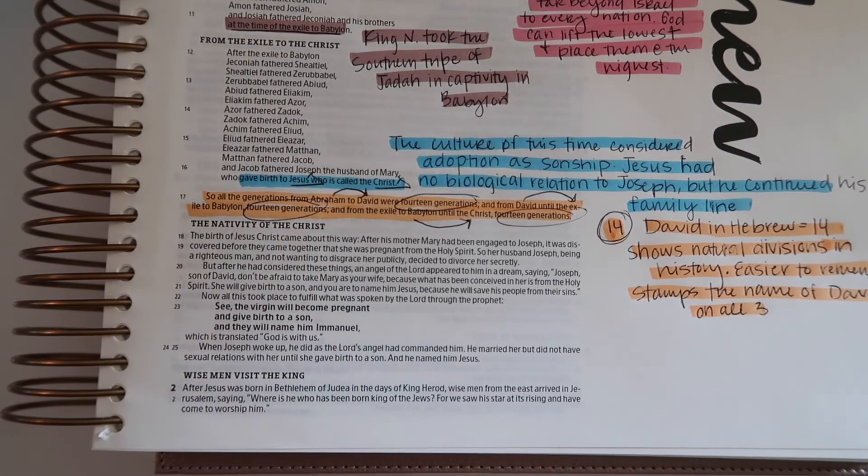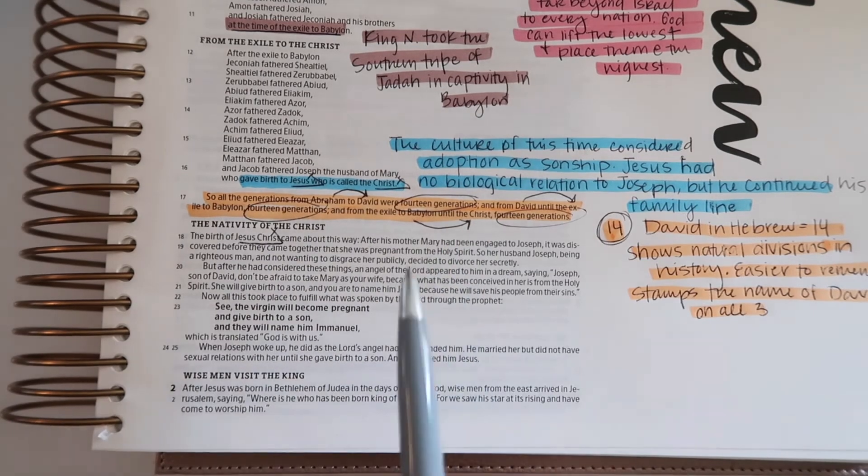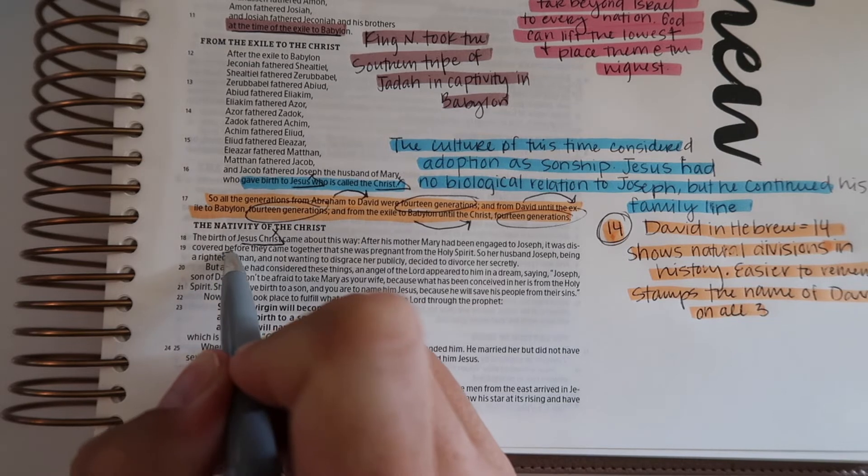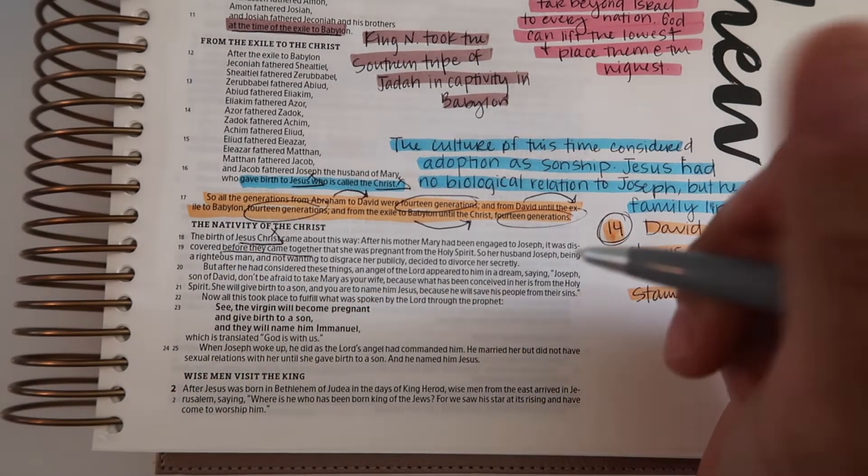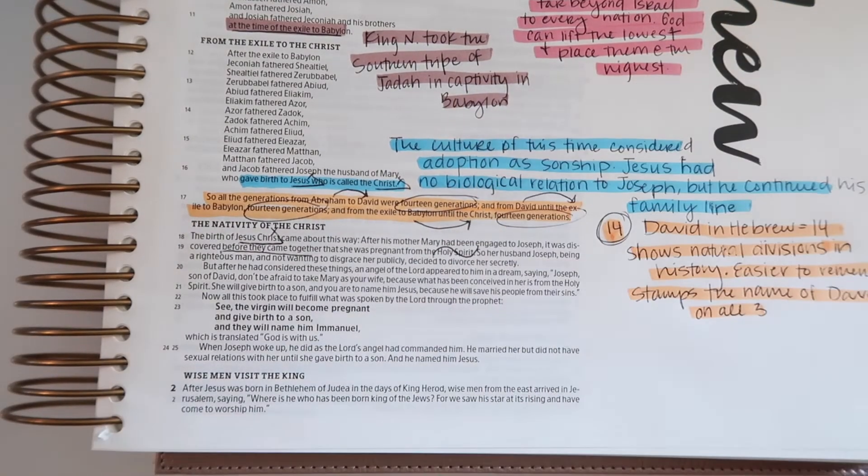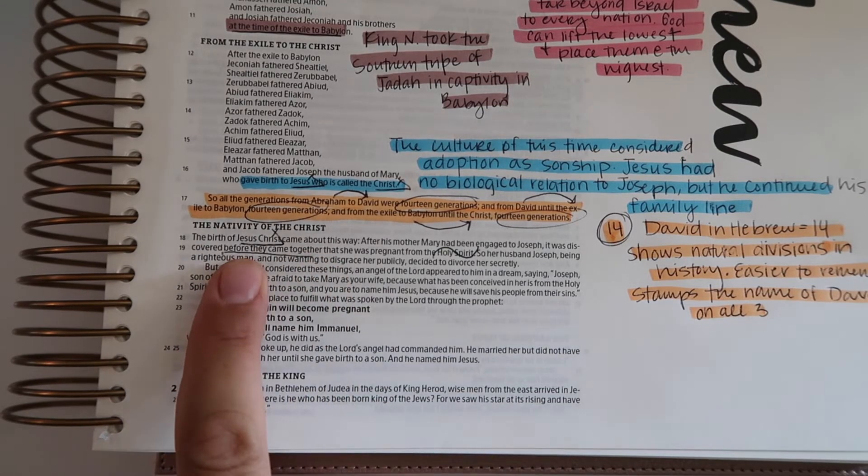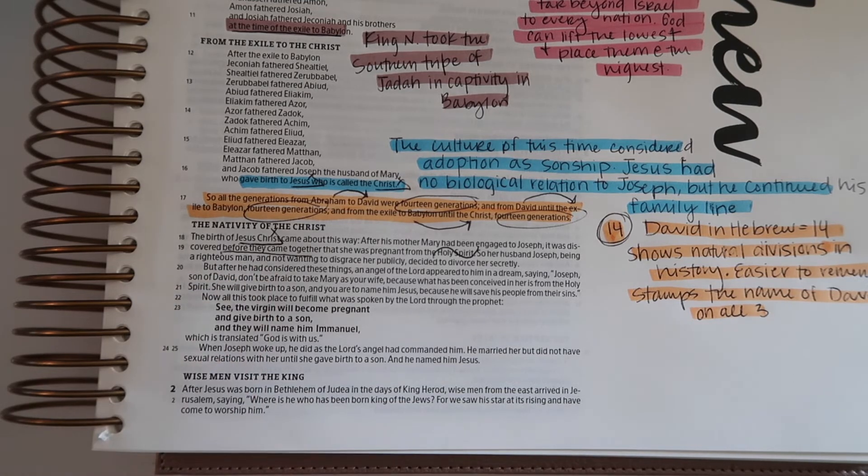Now we're gonna go into the nativity of the Christ, Jesus's birth. The birth of Jesus Christ came about this way: after his mother Mary had been engaged to Joseph, it was discovered before they came together that she was pregnant from the Holy Spirit. Before they came together - that's so important to know. I'm going to write that.